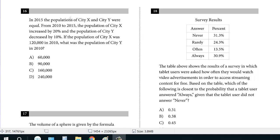In 2015, the populations of City X and City Y were equal. From 2010 to 2015, the population of City X increased by 20%, and the population of City Y decreased by 10%. If the population of City X was 120,000 in 2010, what was the population of City Y in 2010?